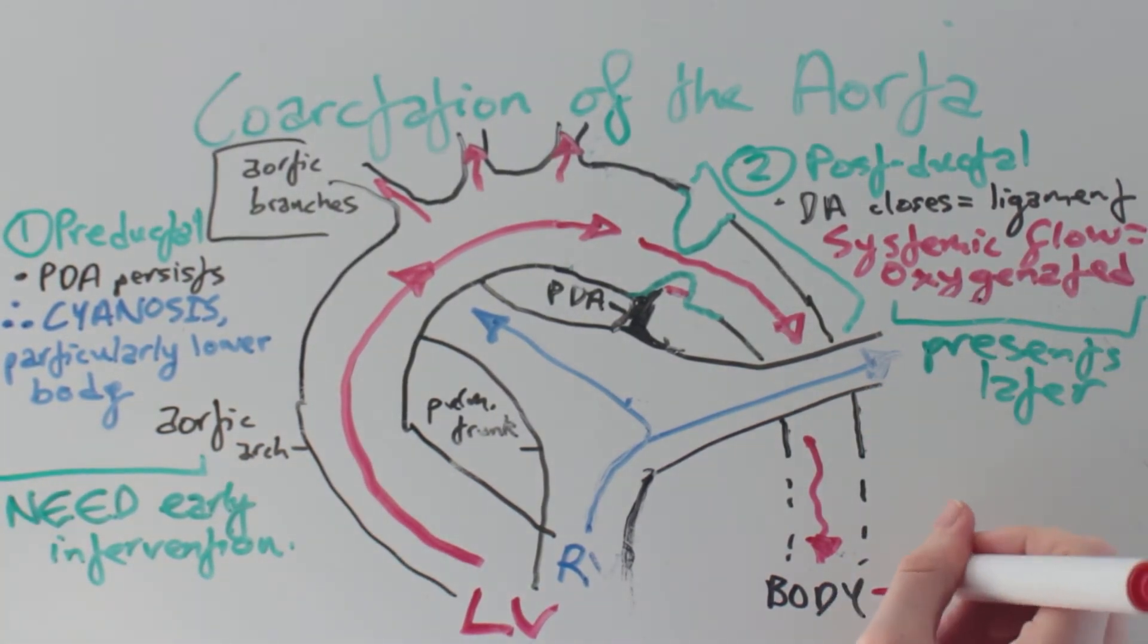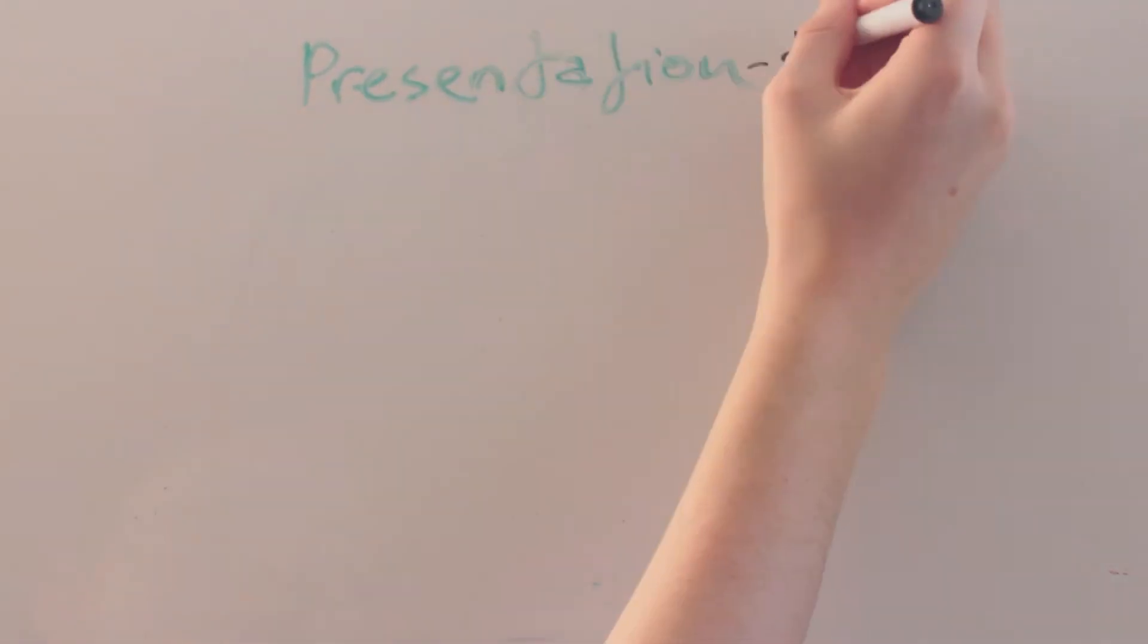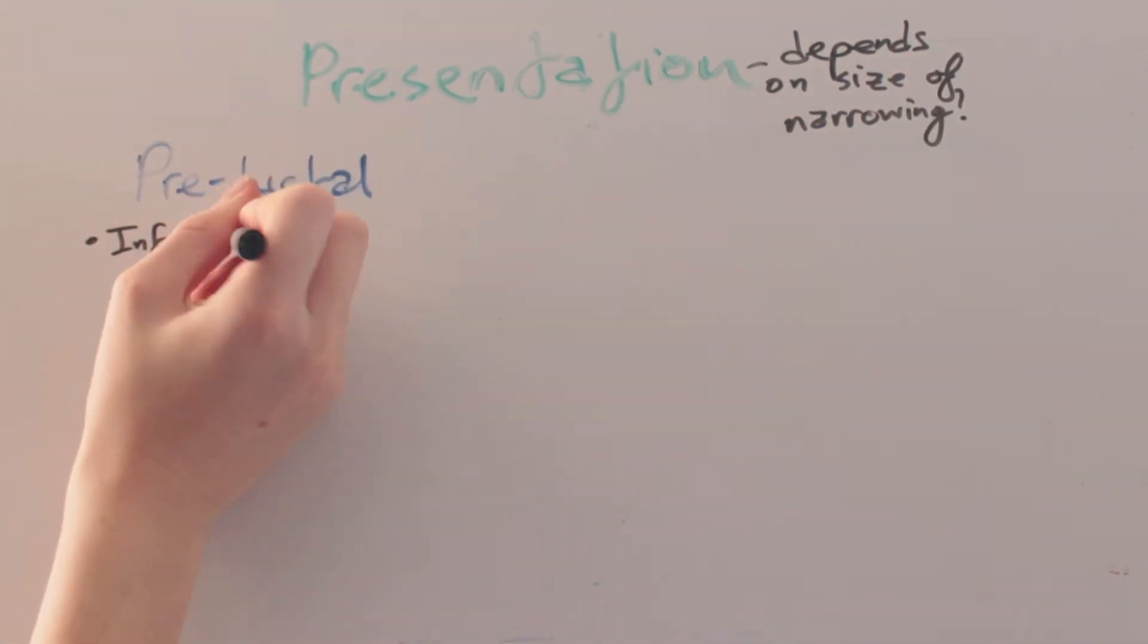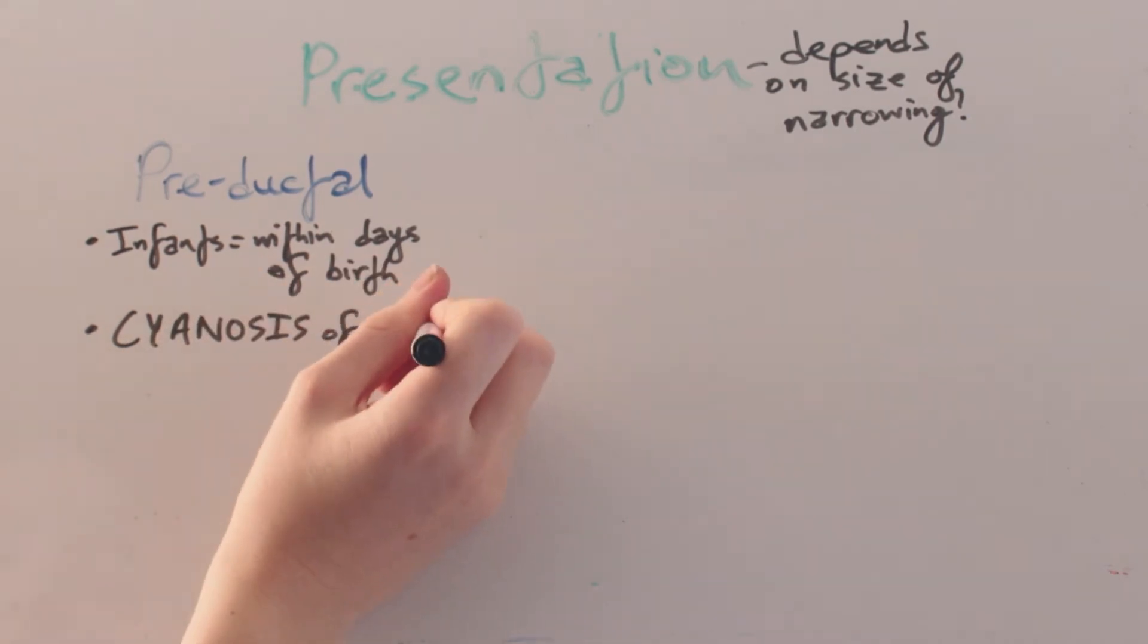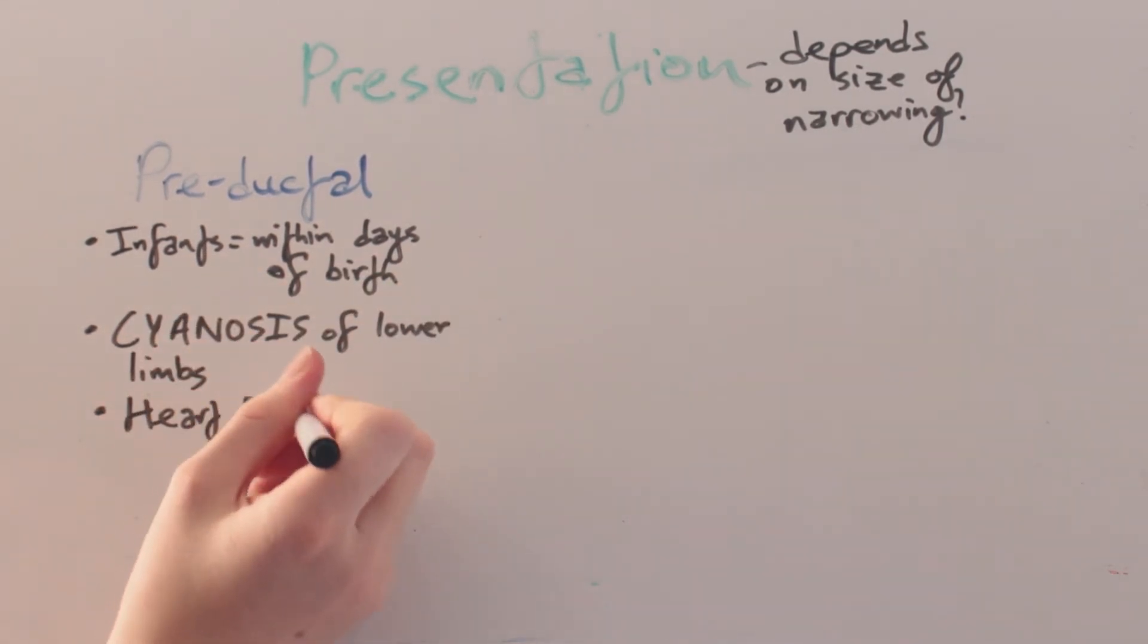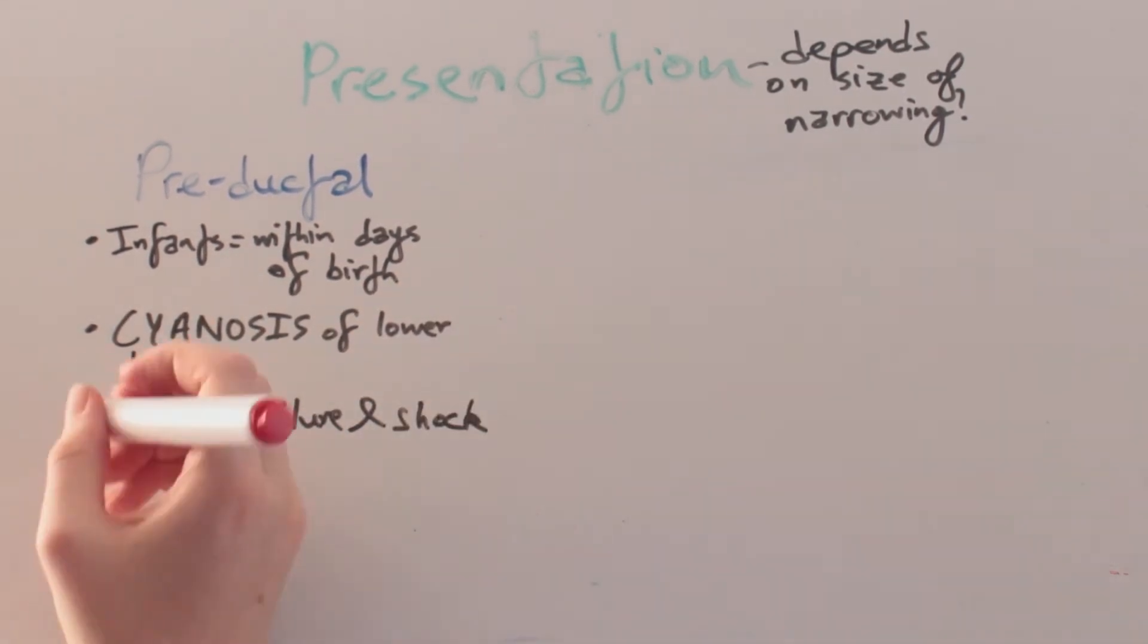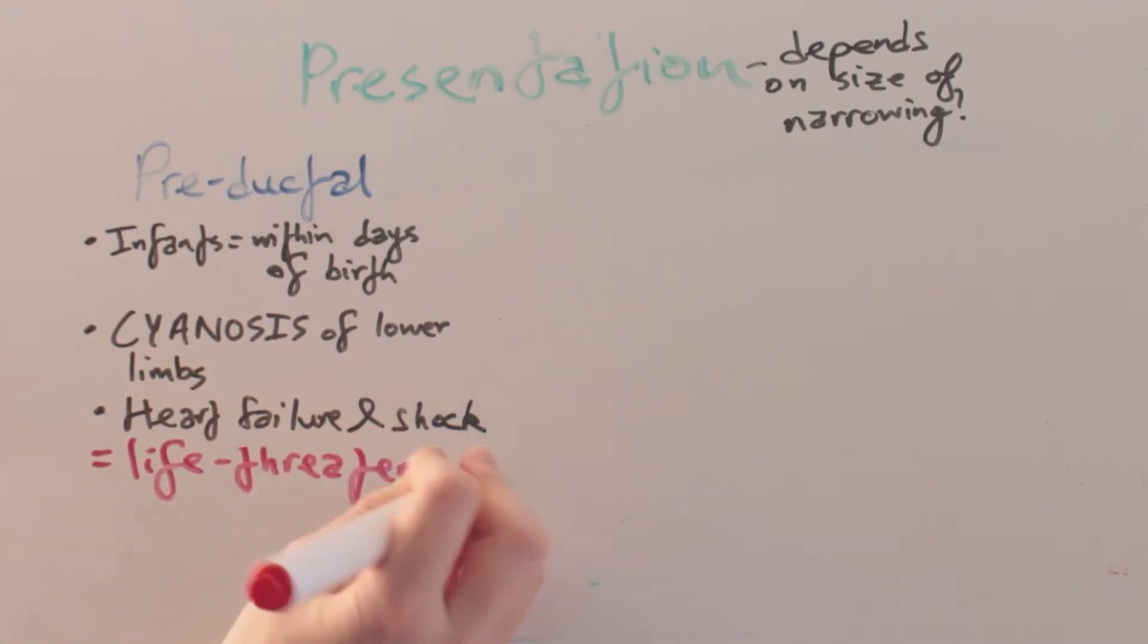There is reduced flow to the body. The presentation depends on the size of the narrowing. Pre-ductal presents in infants within days of birth as cyanosis of the lower limbs. If the ductus has already closed, there will be heart failure and shock. The situation is life-threatening.